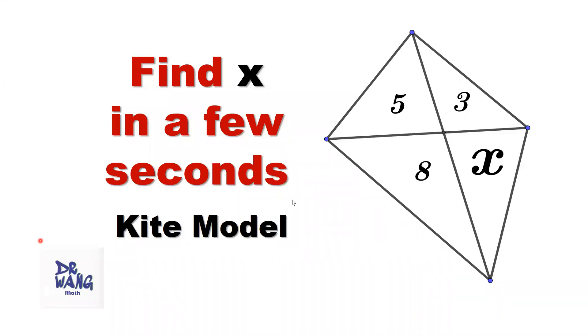Hello everyone, this is a kite, not a regular kite. The diagonals separate the whole area into four pieces. This area is 3, this area is 5, this area is 8, this area is x. Can you find the x value in a few seconds?